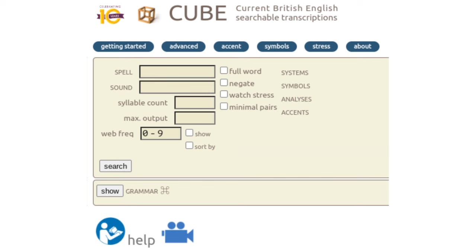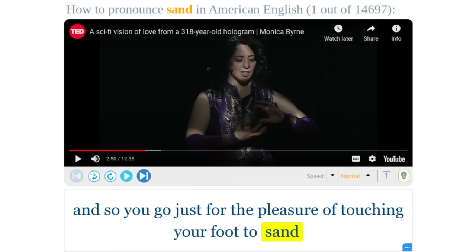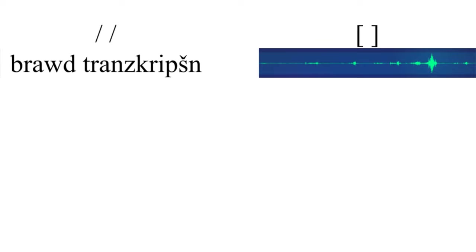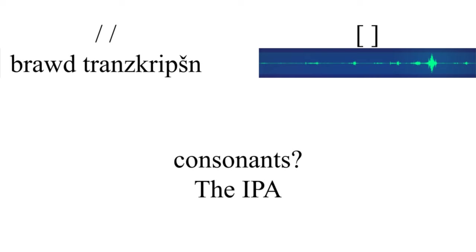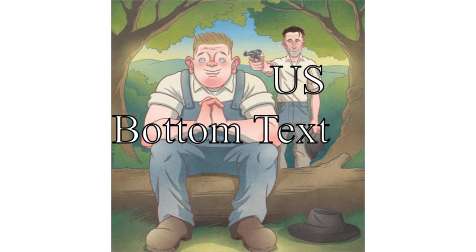Or better yet, just use a recording. That's what the Forvo dictionary does — it takes you to a website where you can watch other people pronounce the words. So the IPA is useless for narrow transcription, and it's useless for broad transcription. What is it good for? Nothing. Perhaps it's time we bite the bullet and retire the IPA.